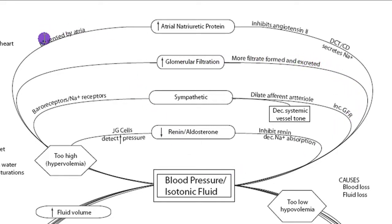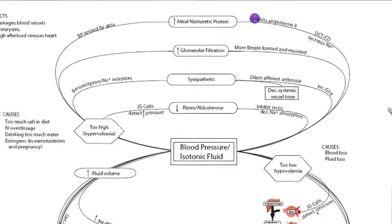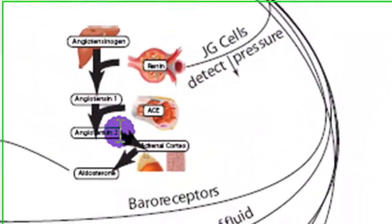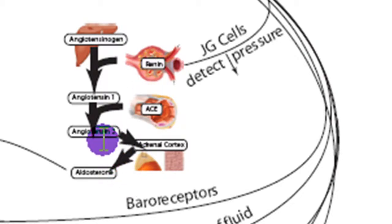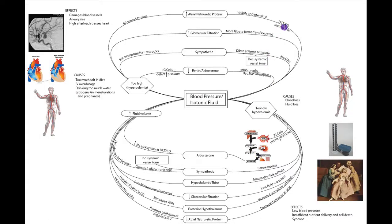Blood pressure is sensed by the right atrium — the heart can weigh in on blood pressure regulation. If overstretched, it releases atrial natriuretic protein, which inhibits angiotensin II. Since angiotensin II is part of the renin cascade, inhibiting it reduces sodium absorption and vasoconstriction. Less sodium absorbed means more sodium is excreted at the distal convoluted tubule and collecting duct. Getting rid of sodium means getting rid of water, and that decreases blood pressure, completing the basic homeostasis of blood pressure and isotonic fluid.